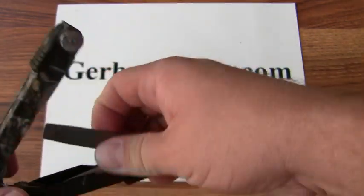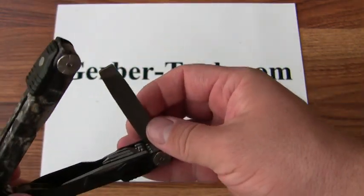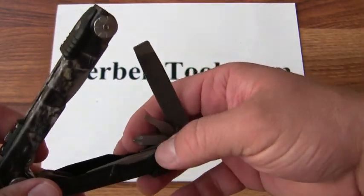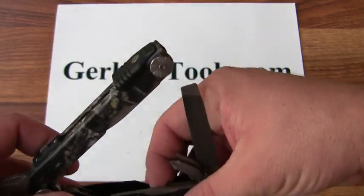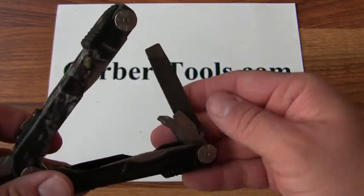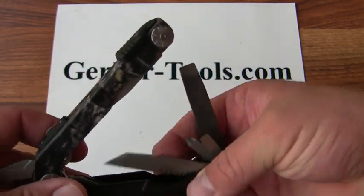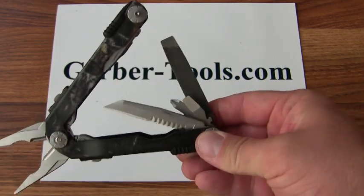On the other side, we've got a file with a large screwdriver, a small flathead screwdriver, a Phillips, another flathead screwdriver with an integrated bottle opener, and a partially serrated knife blade.